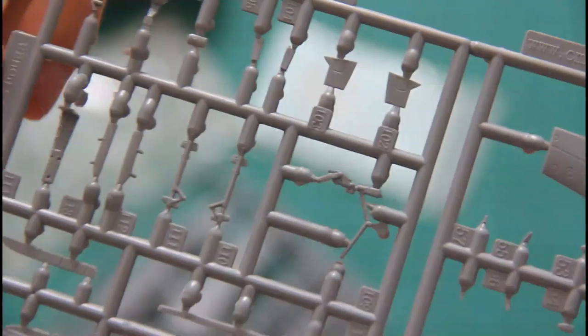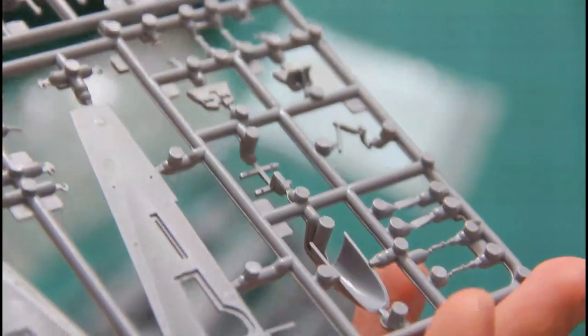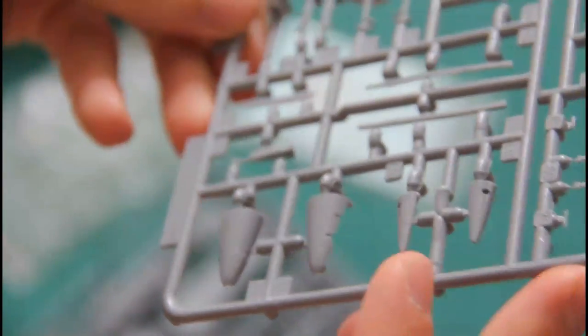And of course we need gear legs and some other minor parts. Here you can see the nose segment which is molded as one piece, and here are two other parts. Very nice molding quality—I have nothing to complain about here. Parts are clean and I think it will be easy to separate them from the sprue and install on the model.